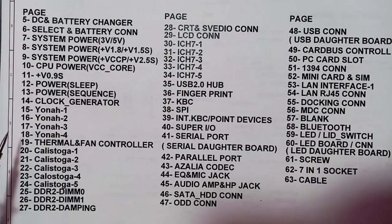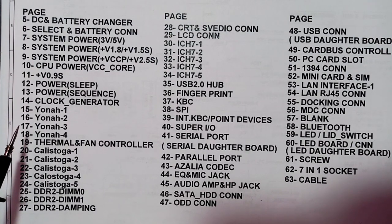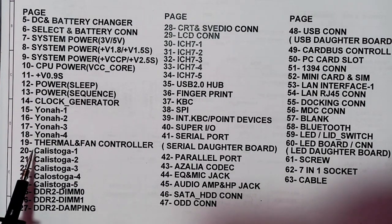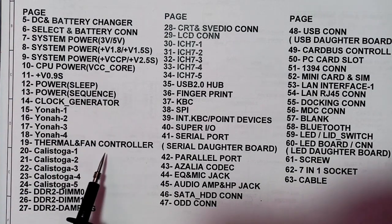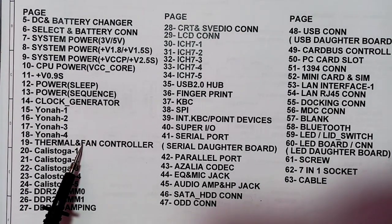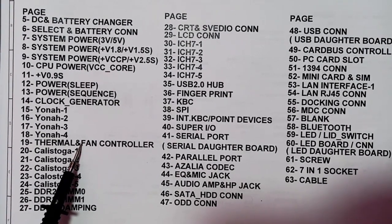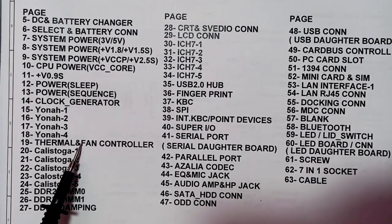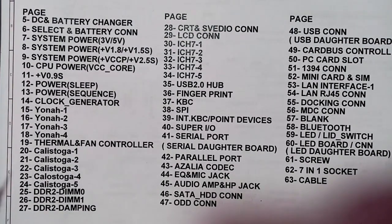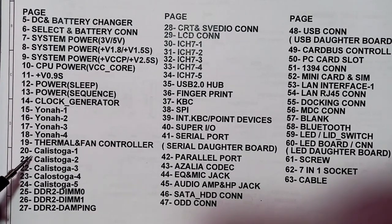In pages 15 through 18, we have the CPU (central processing unit). Then in page 19, we have the thermal and fan controller — an IC that controls the fan speed according to the CPU temperature. When the CPU temperature increases, the fan speed increases, and vice versa.